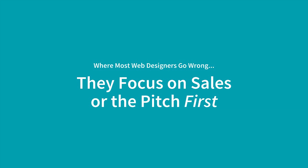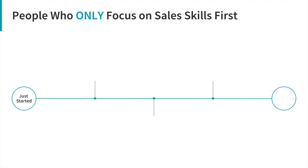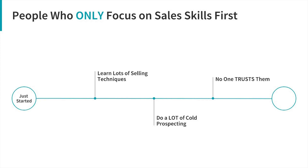The first group that goes wrong focuses purely on sales skills. They just started web design, no track record, no portfolio, but they think getting better at selling will fix that problem. They read some books, watch YouTube videos, then go straight into cold prospecting and sending emails — but they get no results. Why? Because it doesn't matter how good their pitch is if there's no trust. The businesses see the email, hear the sales pitch, but think: I don't know who this person is or if they can deliver anything.